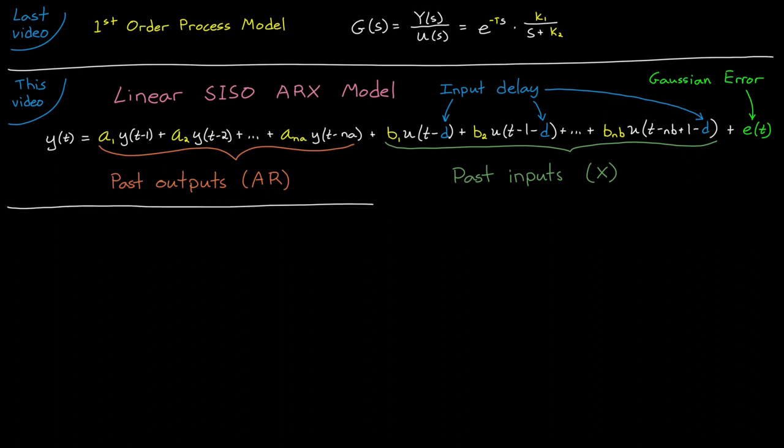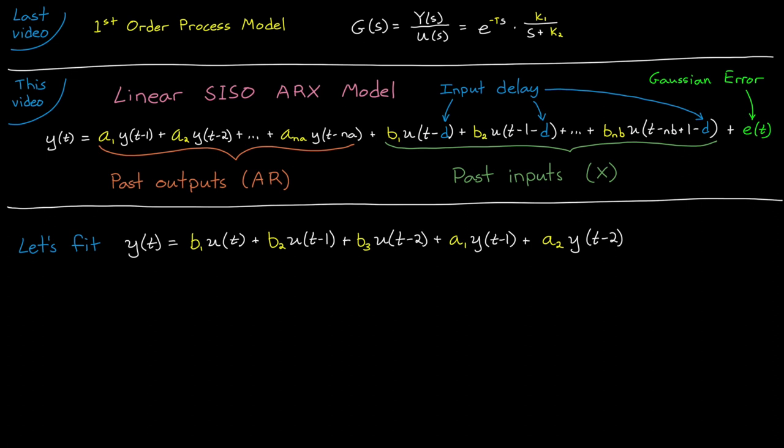Using this model, let's say we want to fit a second order linear equation with no input delay to our dataset. So the output is a function of the past two output values, and the current input value and the past two inputs.